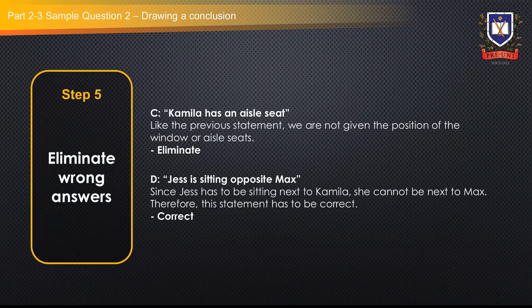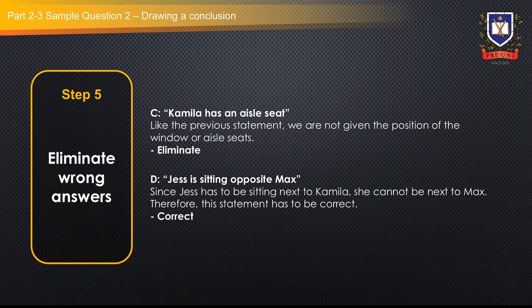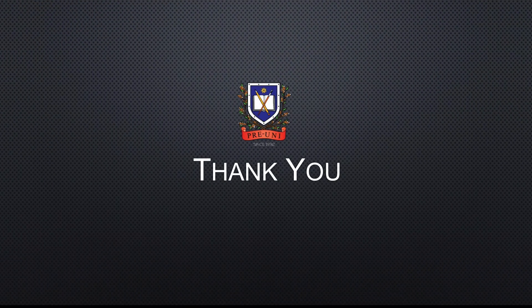From the diagram, we have deduced that option D is the correct statement: Jess is sitting opposite Max. Since Jess has to be sitting next to Camilla, she cannot be next to Max. Thank you for watching this video and hopefully it has helped you understand a bit about thinking skills and the strategies on how to solve these questions. Please note, as stated at the start of the video, studying and reading consistently are essential for successful outcomes.